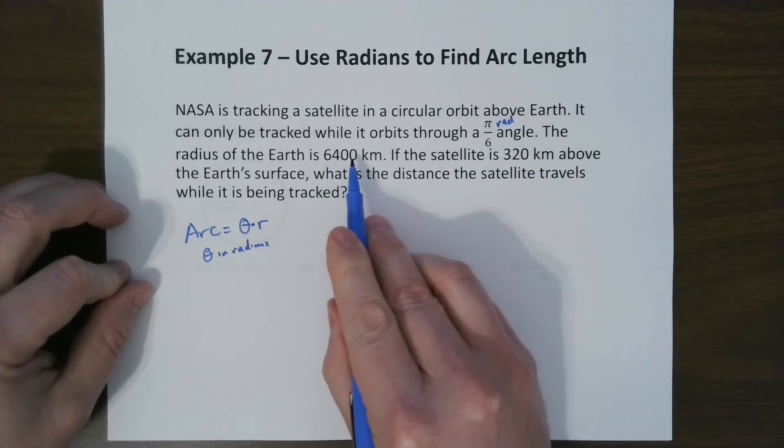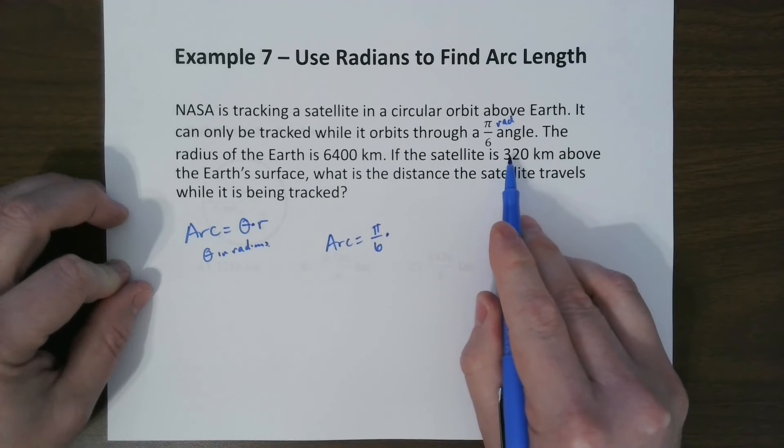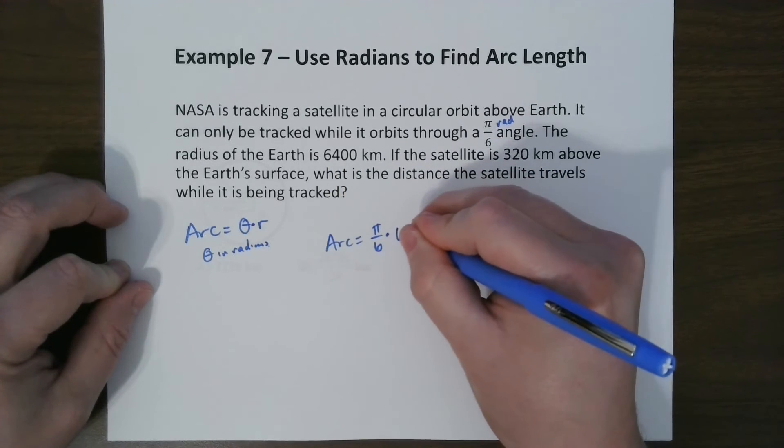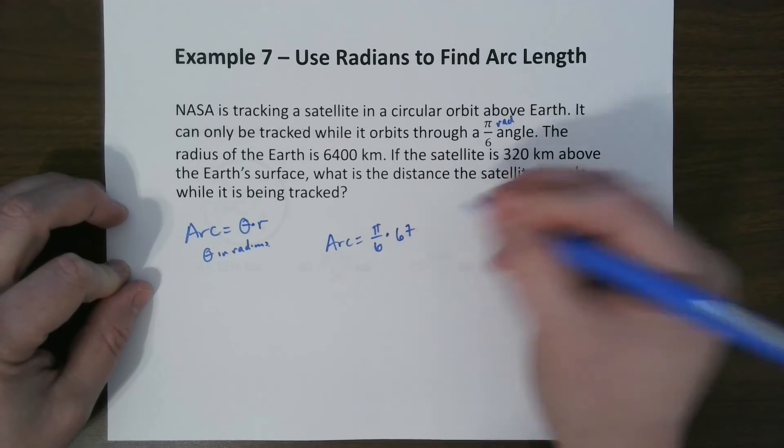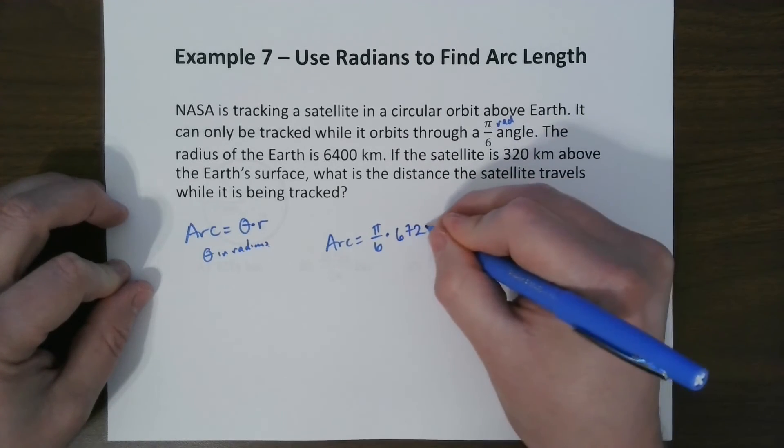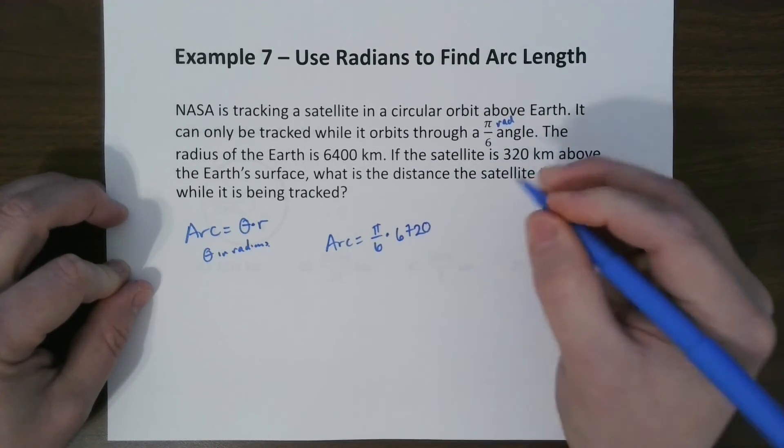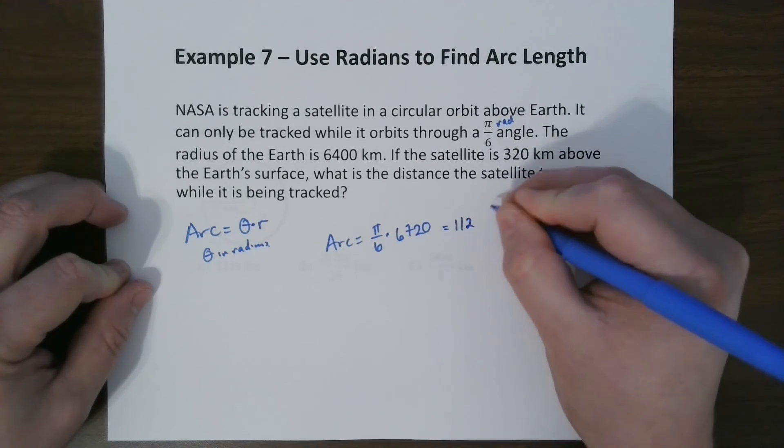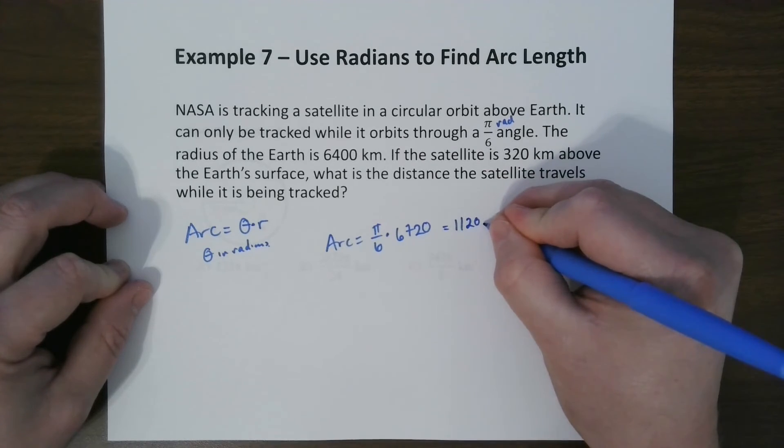Now the radius of the Earth is 6,400, but it's 320 kilometers above. So we add those up, we get 6,720.